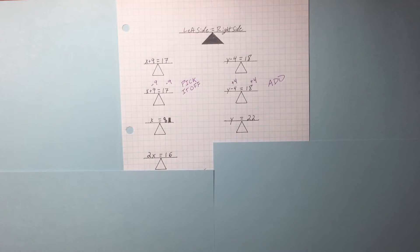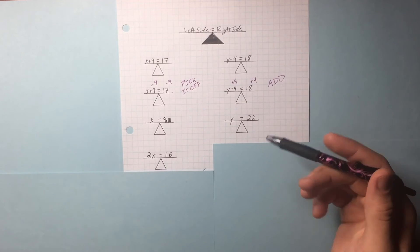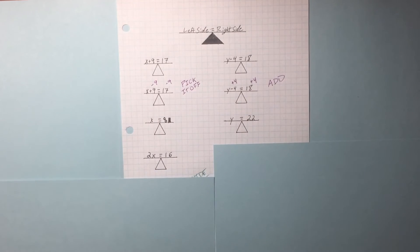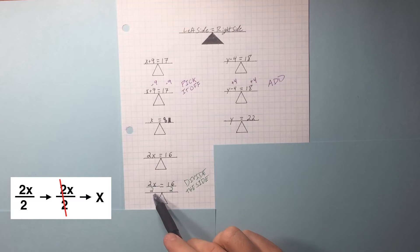Okay, so we have something like this. 2X equals 16, or 2 times X equals 16. What's the opposite of 2 times? Divided by 2. This 2 over 2 equals 1, leaving us with just X. 16 divided by 2 is 8. 8 equals X.